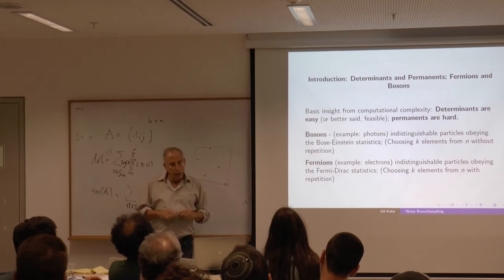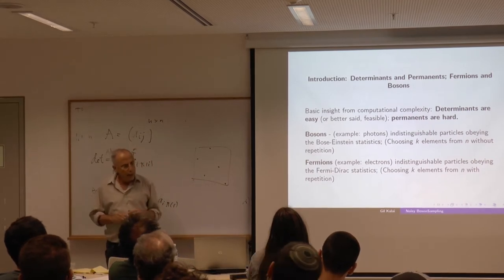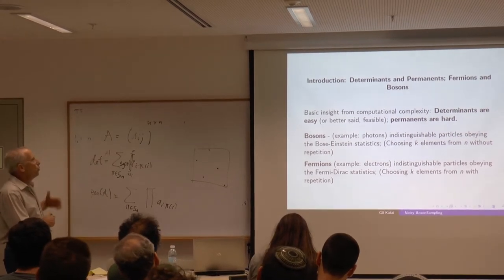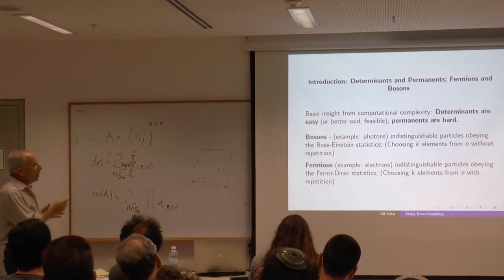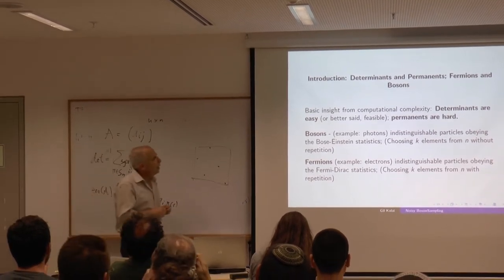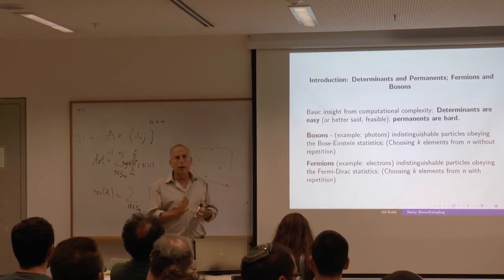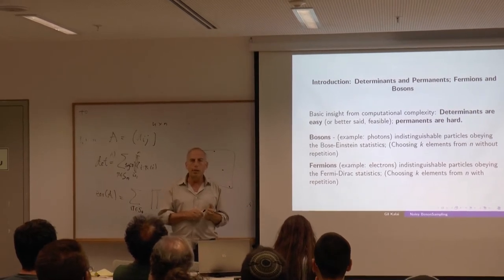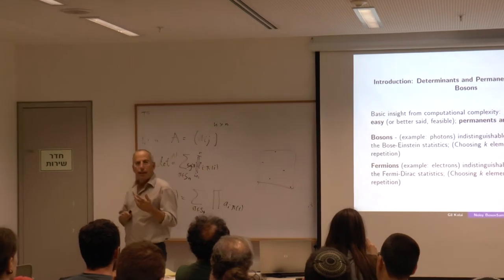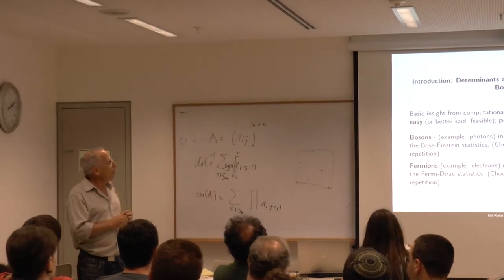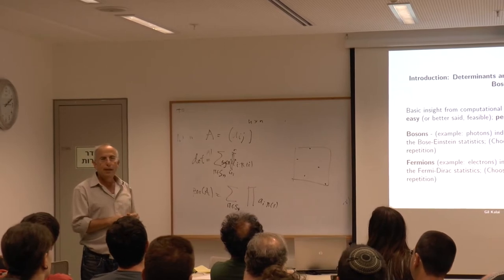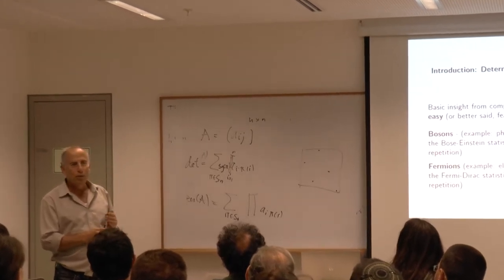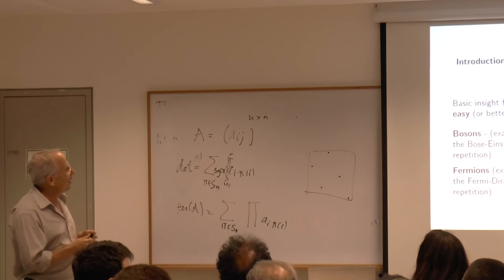There was a talk here, maybe 20 years ago, where Avi Wigderson talked about permanent and determinant. Then Nati noted the connection to physics and said, jokingly, that it's much harder to be a boson than to be a fermion.